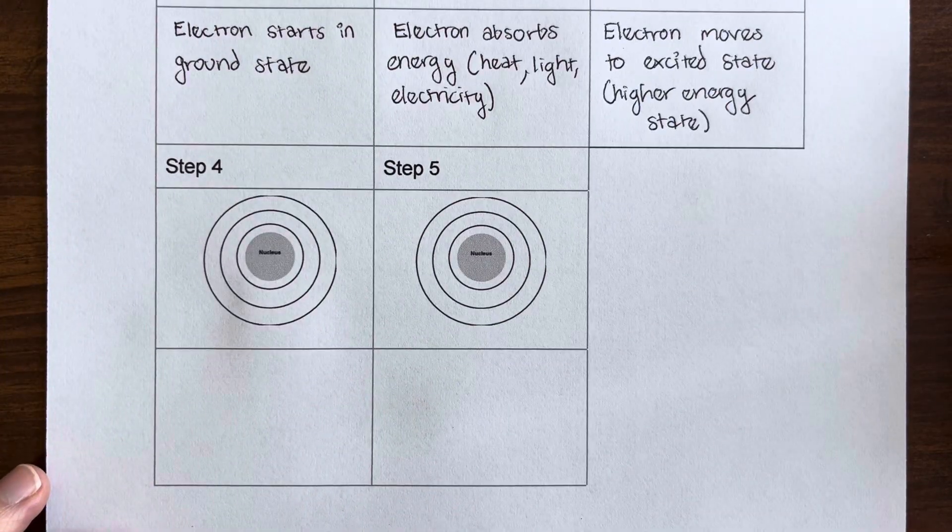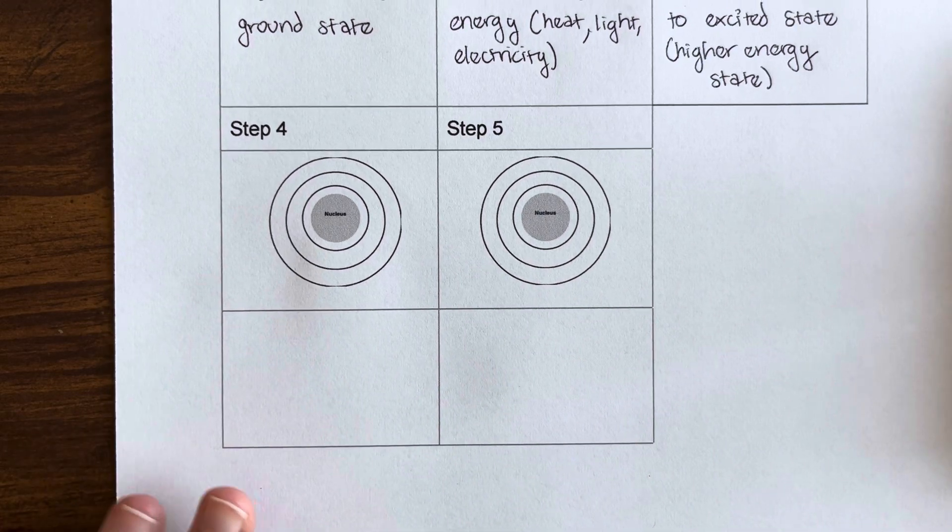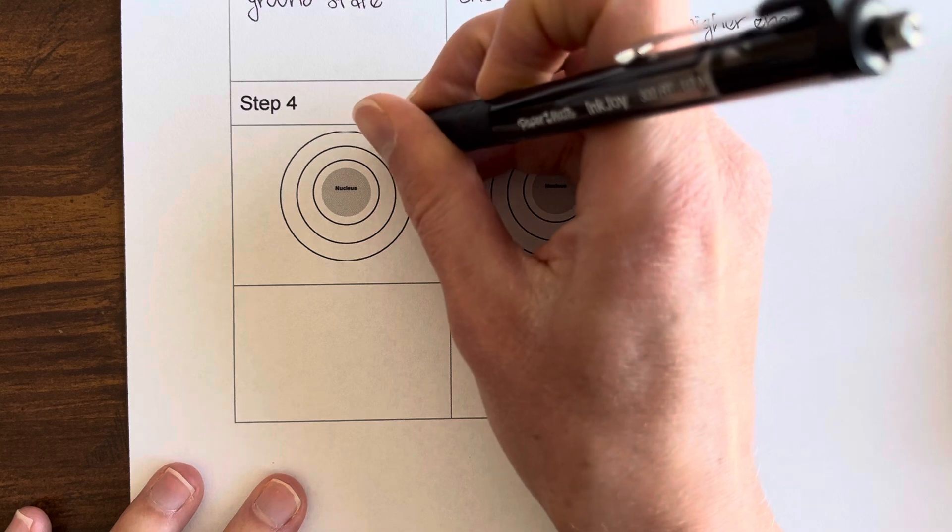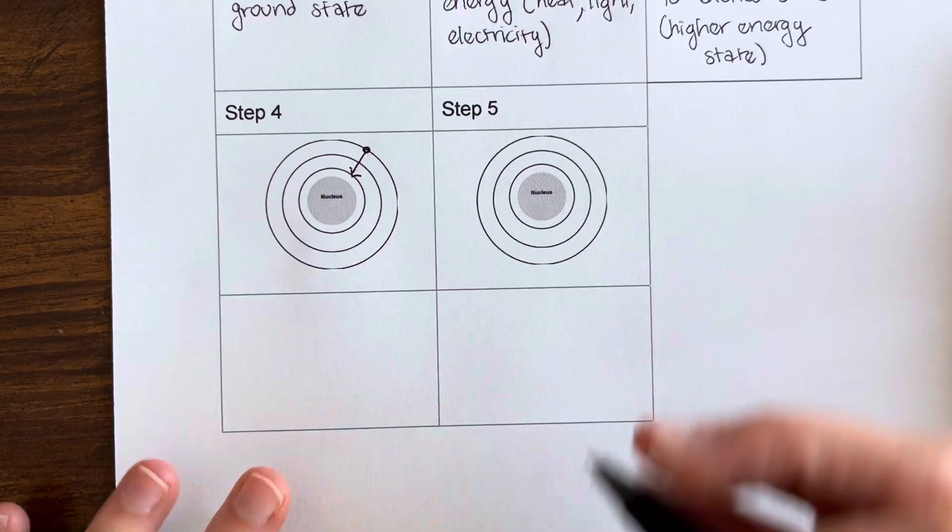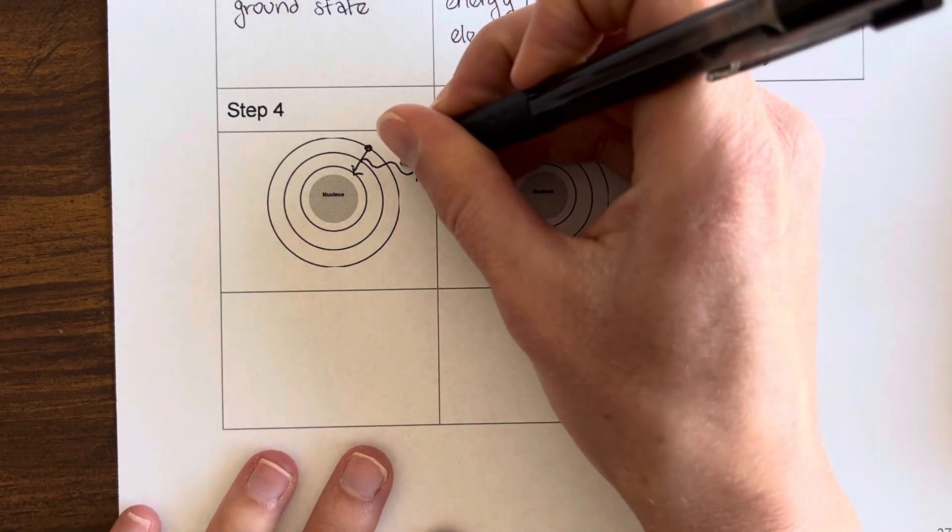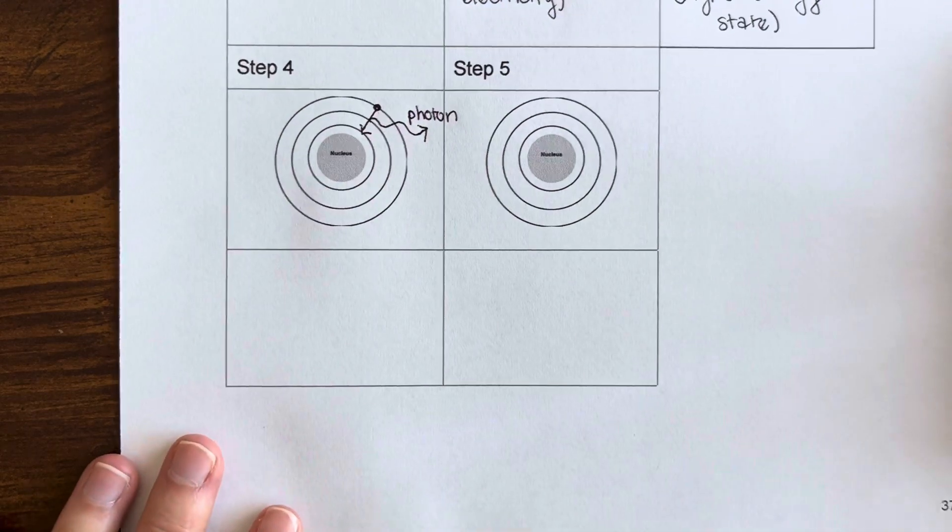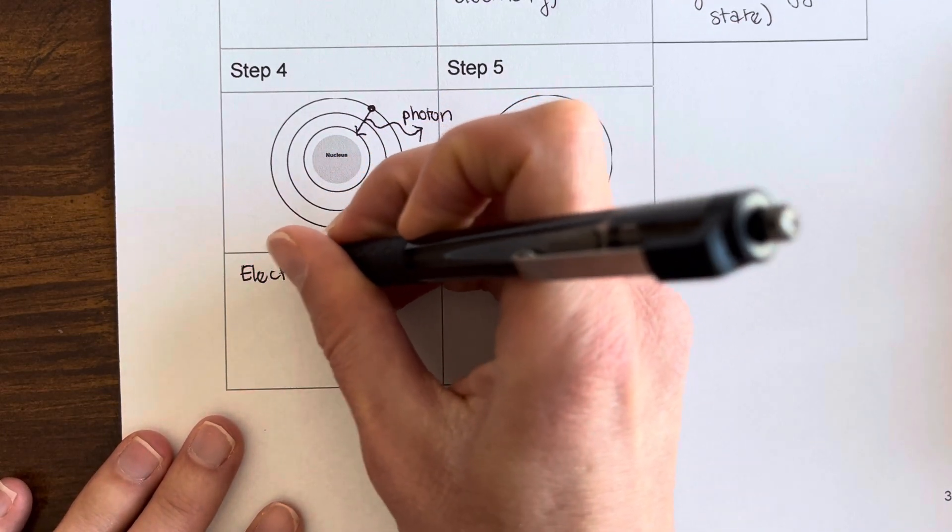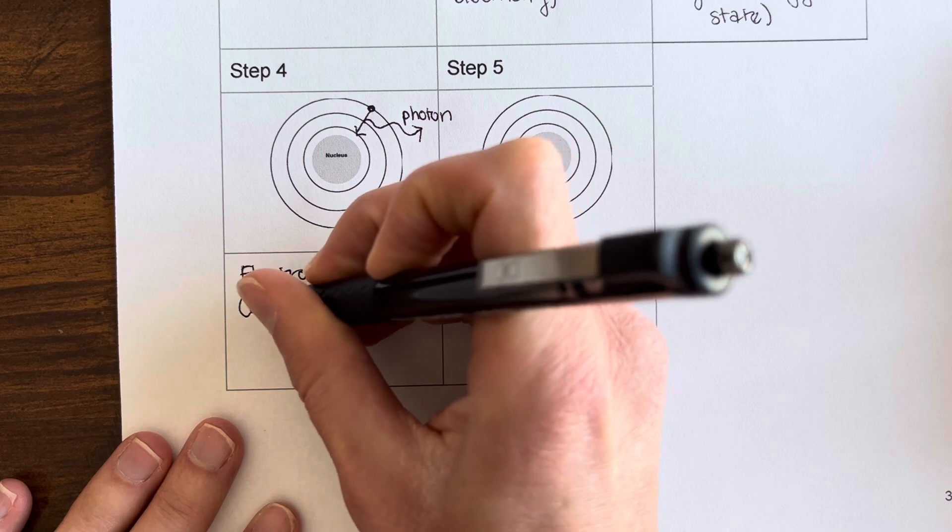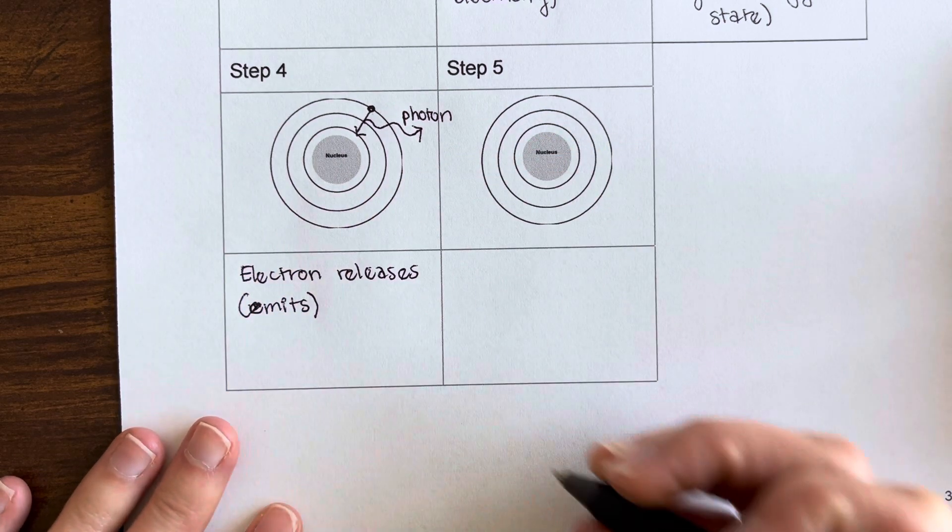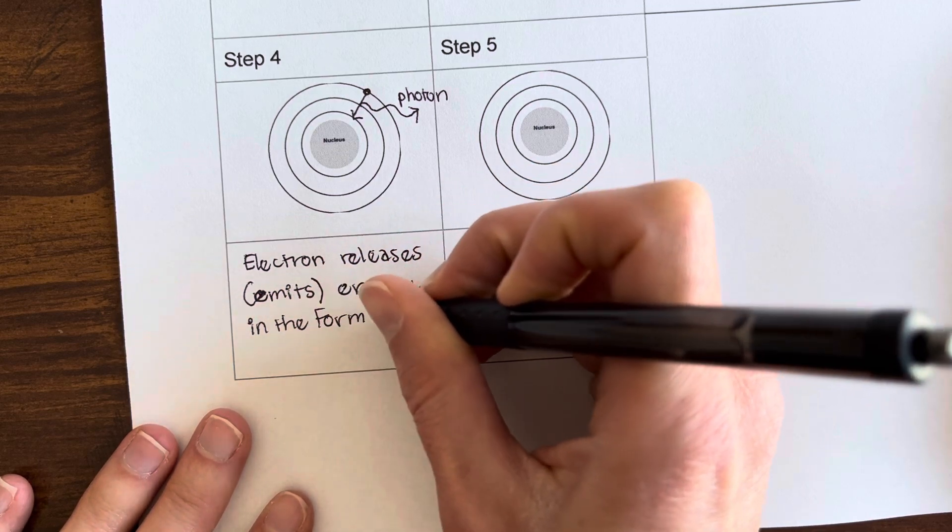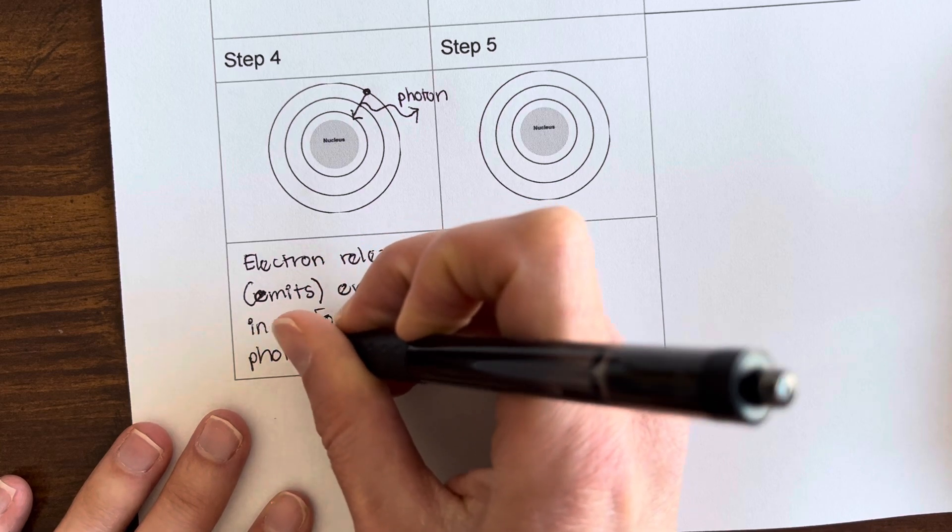And then moving down to our fourth panel here. The electron does not want to stay in excited state. It wants to move back down. So we're going to have the electron move down to ground state. So we're going to draw a little arrow there. And then it's going to release energy as it does that. So I'm going to draw a little squiggly arrow. And this energy is going to come in the form of a photon. So a photon of light. So we'll say electron releases or emits is another word we could use here. That's E-M-I-T-S, releases or emits energy in the form of a photon of light.